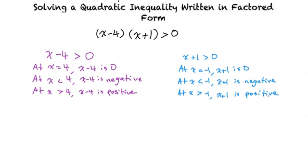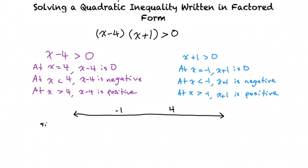So we can draw a number line and show this analysis. We have negative 1 here and 4 here. We have the sign row for x minus 4 and the sign row for x plus 1.